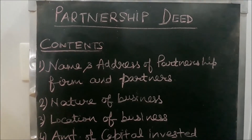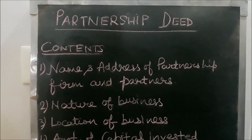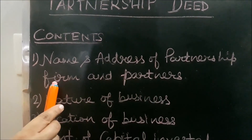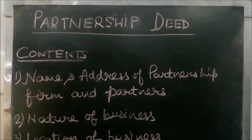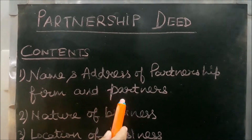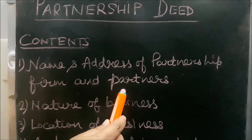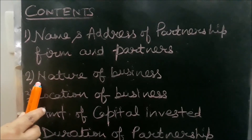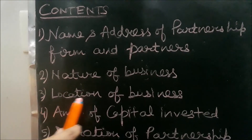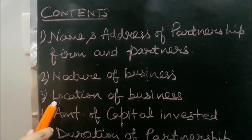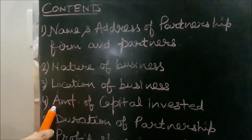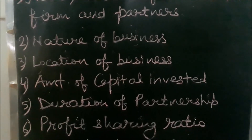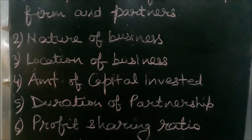Now we will discuss the contents or clauses of the partnership deed. The first content is the name and address of the partnership firm and partners — the name and address of both the firm and each partner are mentioned. Second is the nature of business — whether it is a trading or manufacturing business. Third is the location of business — in which district and state. Fourth is the amount of capital invested — which partner has invested what amount, and what the total capital is.